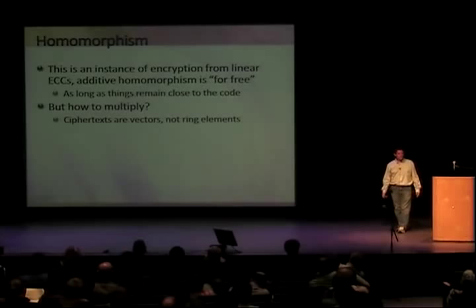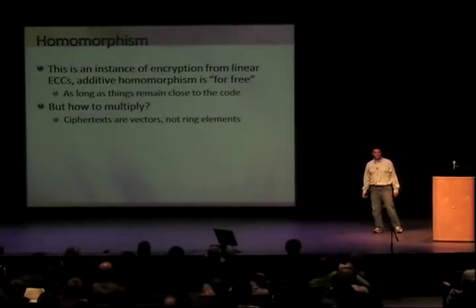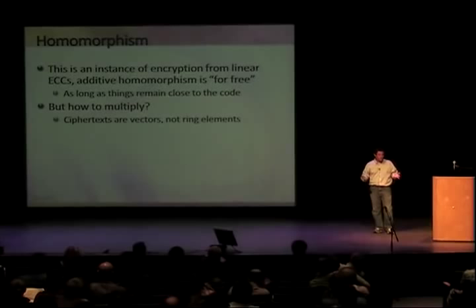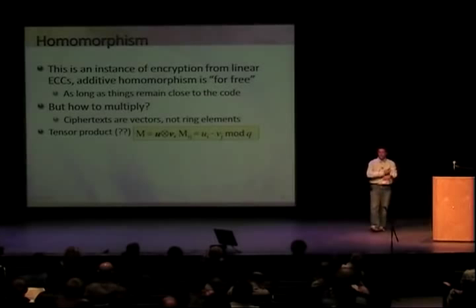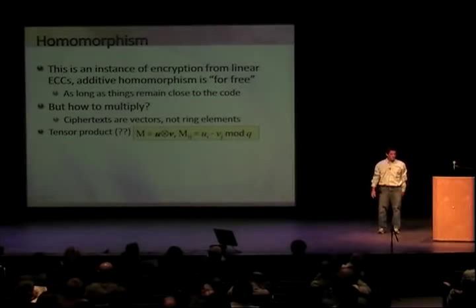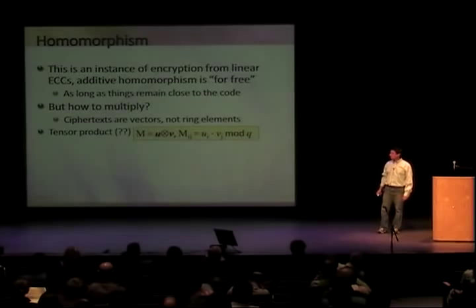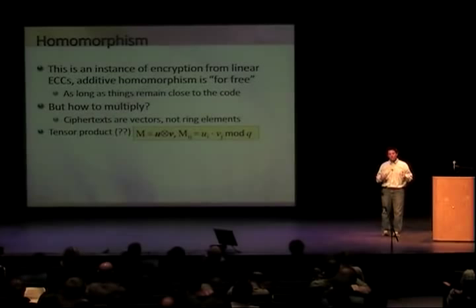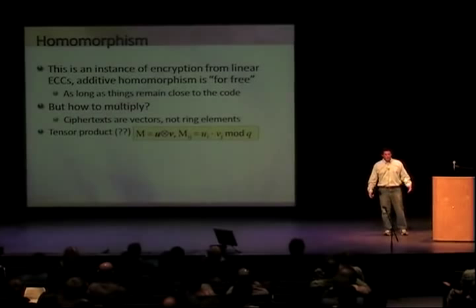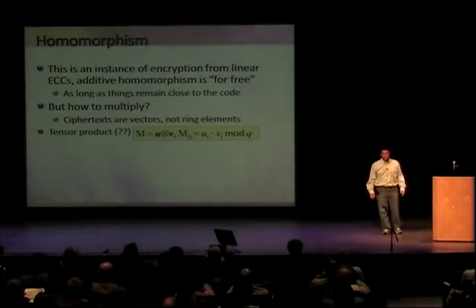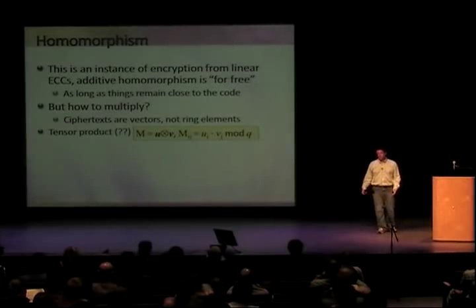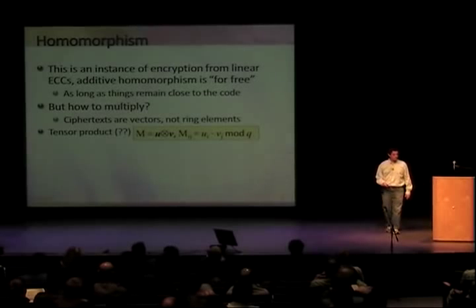The first question we ask is: how do you multiply? These are vectors — multiplication of two vectors is not straightforward since they're not ring elements. The idea of using tensor product to multiply vectors had occurred to people previously. I'm going to run with it to show what problems arise, since people looked at it, saw an obvious problem, and went to the blueprint instead.